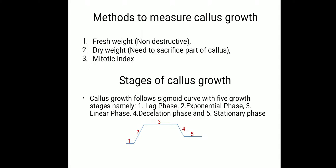Callus growth can be measured by three methods. First, based on fresh weight — this method is non-destructive; during subculture we can take the weight in a sterile plate using a sterile electronic balance inside the laminar hood, and the callus can be used for further subculture or other purposes. Second, dry weight basis — here we have to sacrifice the callus by taking a small portion, drying it, and weighing it. Third, mitotic index — we check the DNA content, identify the mitotic ratio, and determine the growth stage of the callus. In modern practice, this is performed using flow cytometry.